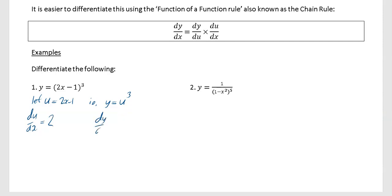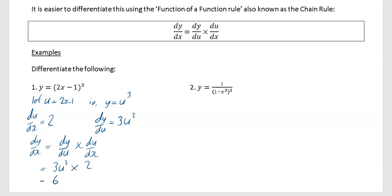Then dy by du: y equals u to the power of 3, so differentiating with respect to u gives 3u². Write out the whole formula: dy by dx equals dy by du times du by dx. In this case that's 3u² times 2, which equals 6 upon 2x minus 1 all squared.